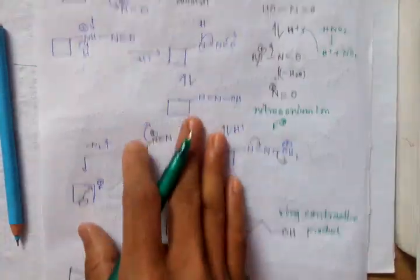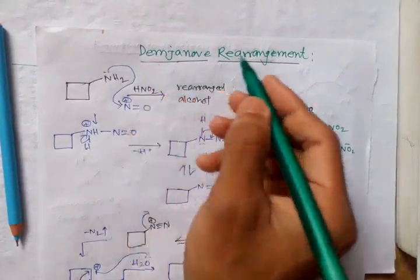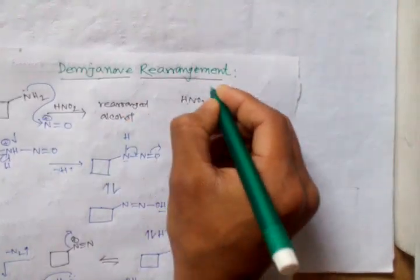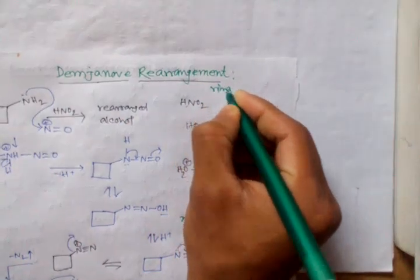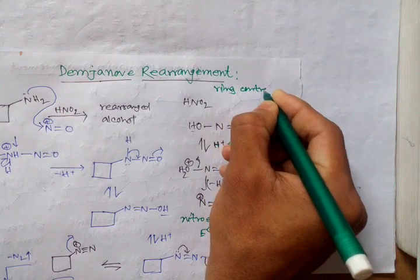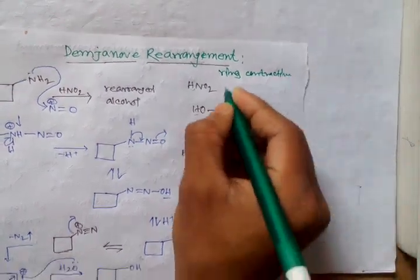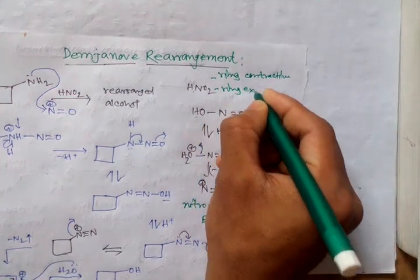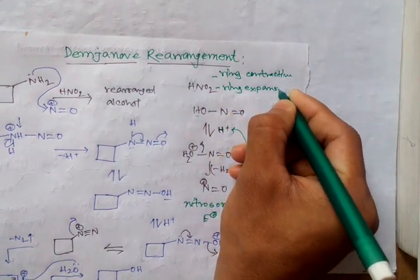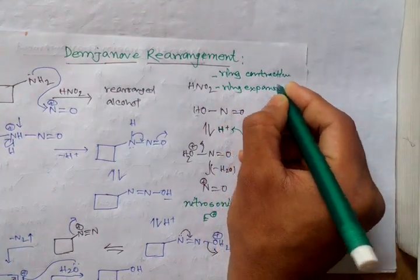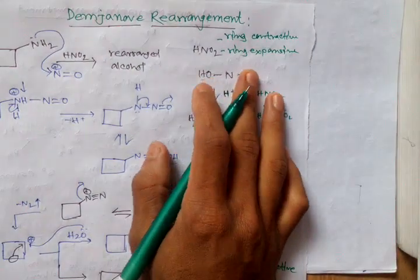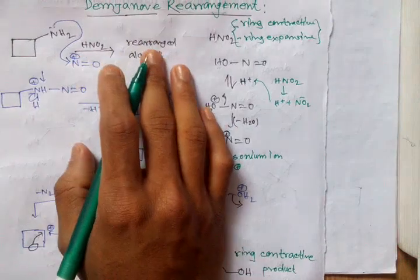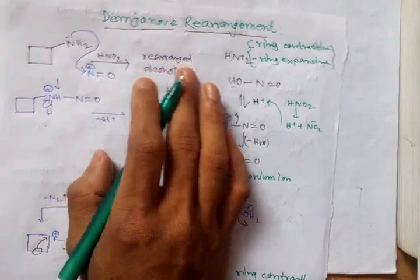In this reaction, the Demjanov rearrangement, we get ring contractive products as well as ring expensive products. It is a basic rearrangement of organic chemistry.